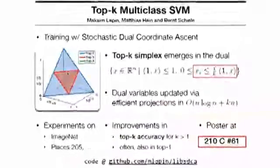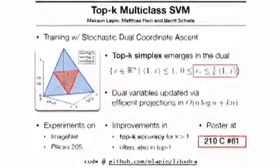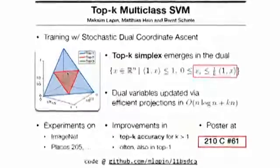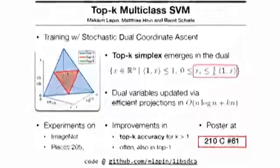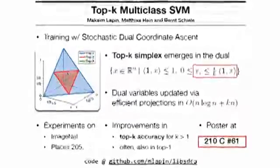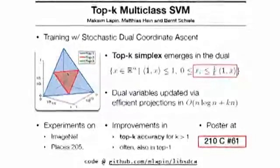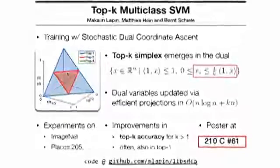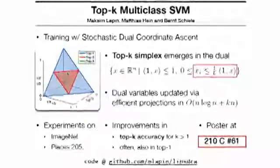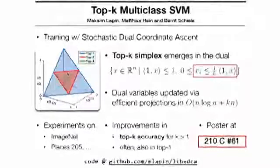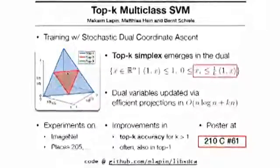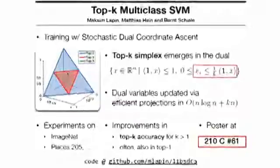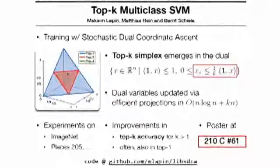We call it the top-k hinge loss because it is a convex upper bound on the direct non-convex top-k loss, which you can see at the bottom of the slide, and because it reduces to the multi-class loss of Crammer and Singer for k equals one. For training, we propose an efficient optimization scheme based on stochastic dual coordinate ascent. To optimize the dual objective, we need the projection onto what we call the top-k simplex. As you can see, it reduces to the standard simplex for k equals one, and for k larger than one, there is a non-trivial upper bound on every dual variable. One of our main technical contributions is an efficient algorithm for projecting onto the top-k simplex. Experiments on five datasets, including large-scale ones, show consistent improvements in top-k accuracy and sometimes even in top-1 performance. So please come see us at poster number 61. Thank you.